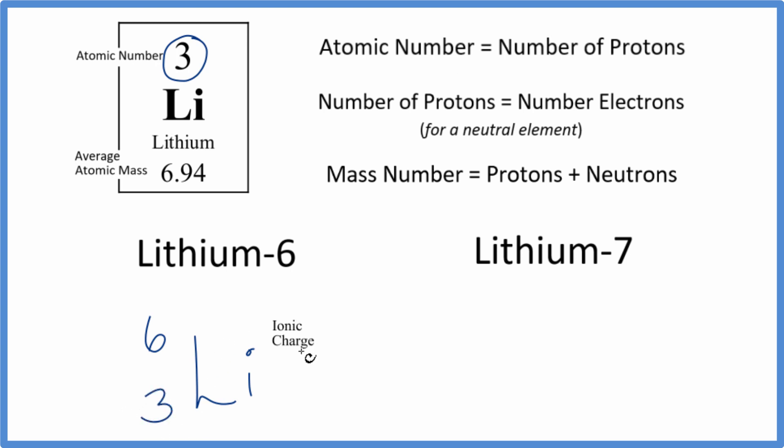And then ionic charge, that's the charge on the element. We don't have a negative or a positive sign after the Li. In fact, all of the elements on the periodic table are neutral. So we could just write a charge of zero in for the ionic charge. So pause and write the nuclear notation for lithium seven.